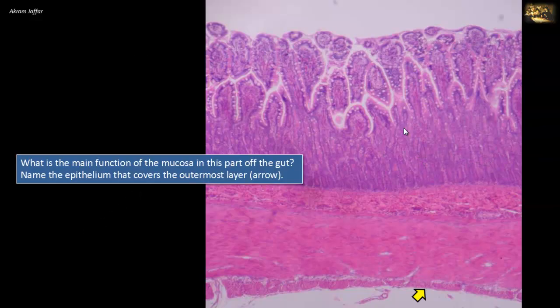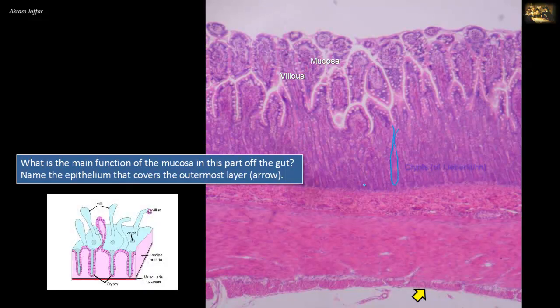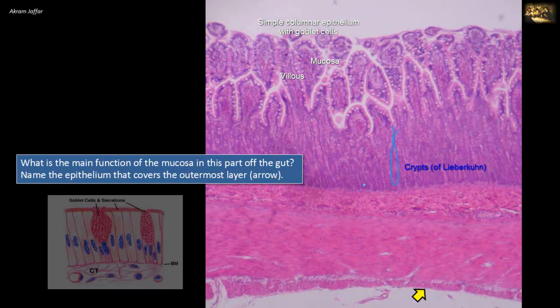What is the main function of the mucosa in this part of the gut? Name the epithelium covering the outermost layer indicated by the yellow arrow. This section shows the features of the small intestine. The mucosal surface is made up of numerous finger-like projections — the villi. The mucosa between the villi is formed into crypts of Lieberkühn. The lining epithelium is a simple columnar epithelium with goblet cells that have an empty apical cytoplasm in the shape of a goblet.